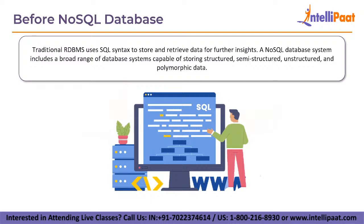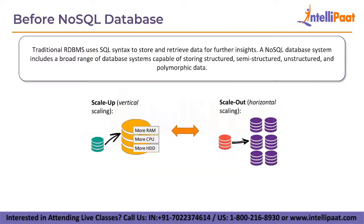The notion of NoSQL databases gained popularity among internet global giants such as Google, Facebook, and Amazon, which deal with massive amounts of data. When you utilize RDBMS for large amounts of data, the system response time gets sluggish. We could scale up our systems by updating existing hardware to overcome this challenge, but this procedure is very costly. The alternative is to distribute database load on multiple hosts whenever the load increases — this method is known as scaling out. NoSQL databases are non-relational, so they scale out better than relational databases, as they are designed with web applications in mind.